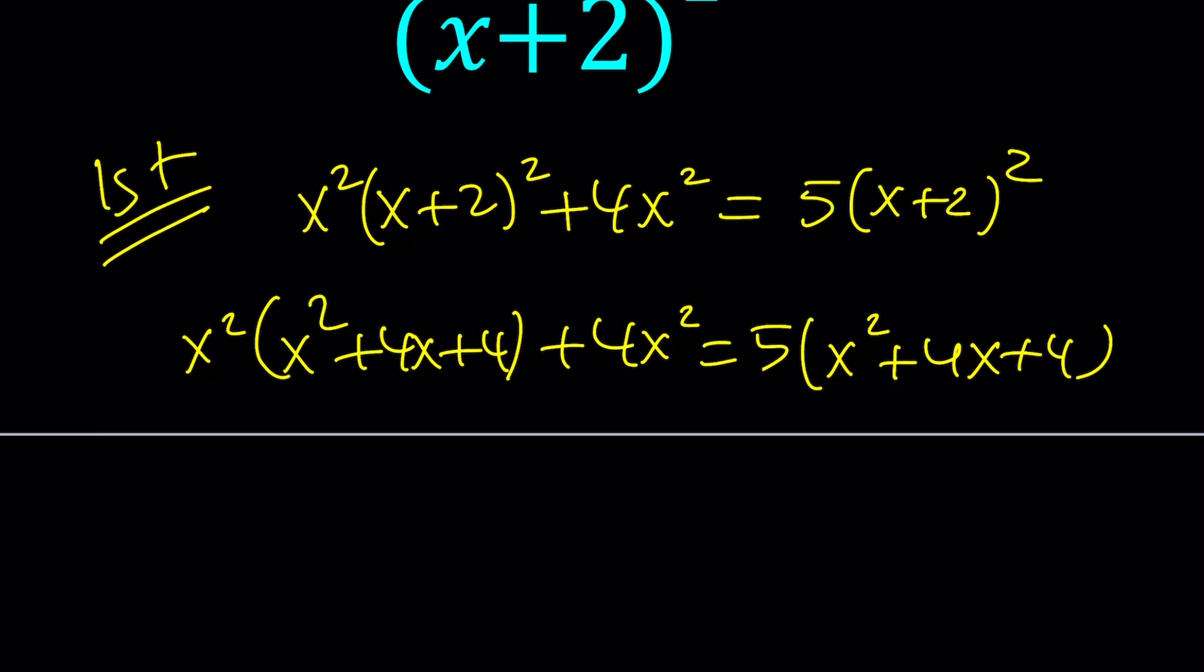Let's distribute everything and rearrange the terms. This is going to be x⁴ and now we're going to get 4x³ and then 4x² plus another 4x² which is 8x². And on the right hand side I'm getting 5x² + 20x + 20.